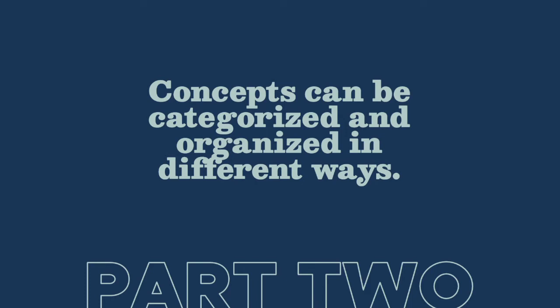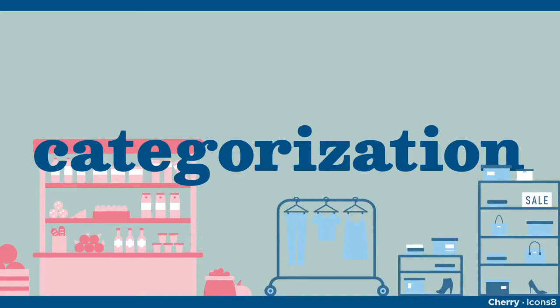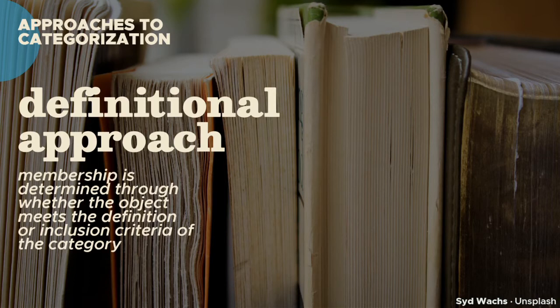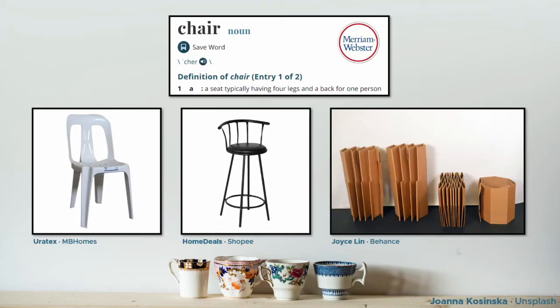Concepts can be categorized and organized in different ways. There are many recent approaches that try to explain how we categorize things. We're going to look at four basic approaches that gave cognitive psychologists a head start on the issue. The first one, the definitional approach, determines membership by asking if an object meets the definition or inclusion criteria of a concept. An often-cited anecdote is that in philosophy classes you will be asked: what is the essence of a chair?